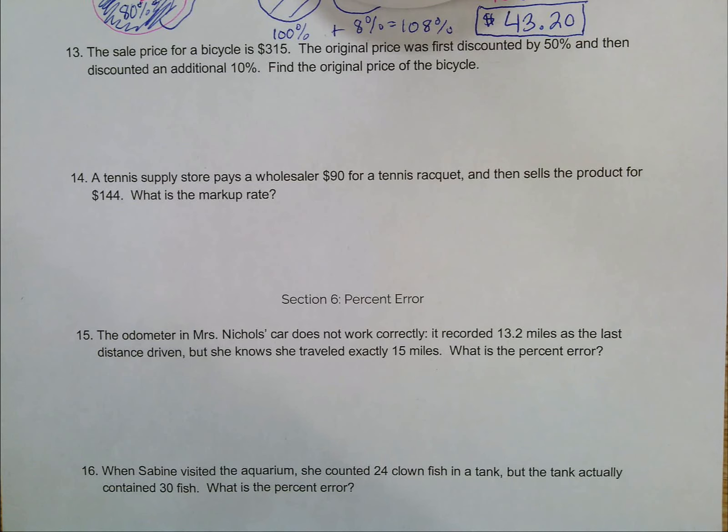This is the video answer key for Accelerated Math Unit 4 test review number 13. The sale price for a bicycle is $315. The original price was first discounted by 50% and then discounted an additional 10%. Find the original price of the bicycle.